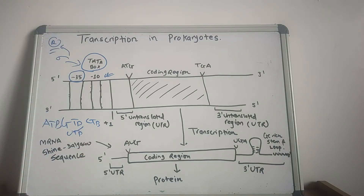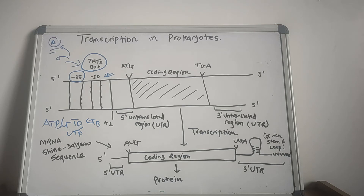For the addition of each nucleotide to the growing chain, a phosphate moiety is released. The sequence of nucleotide bases in the mRNA is complementary to the template strand and identical to the coding strand, except that RNA contains uracil in place of thymine found in the DNA.